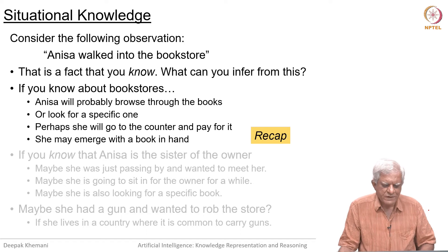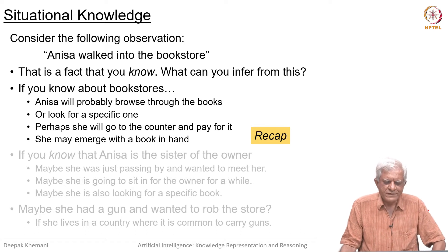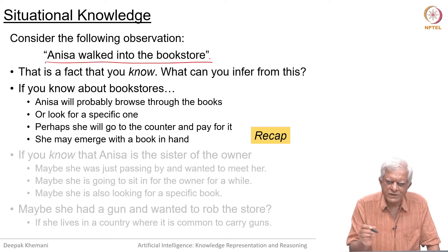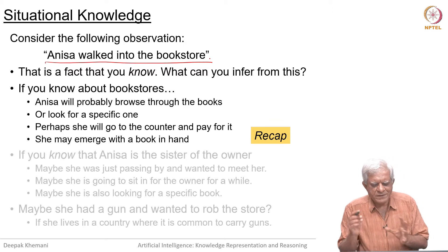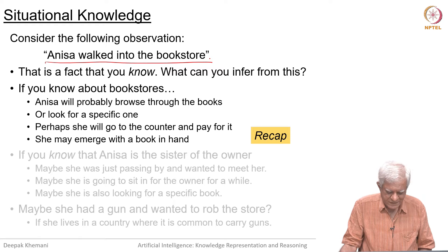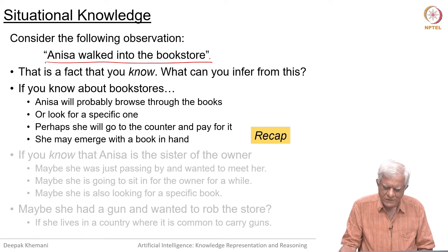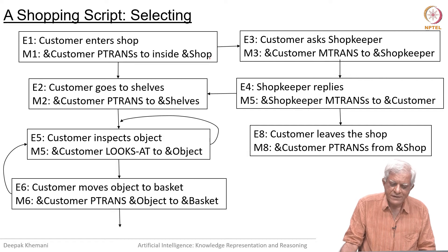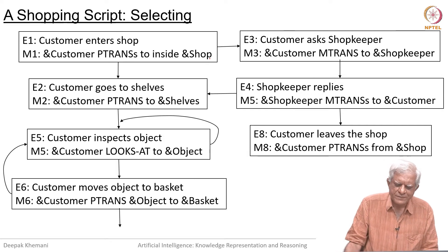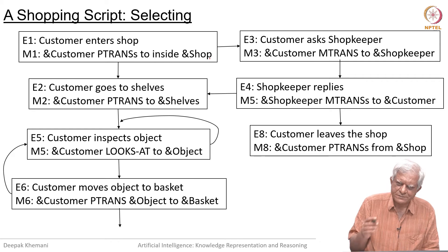This is just a recap of what we have said: we knew something about scripts, that if Anissa walked into a bookstore, we know what to expect — this is typically what happens in a bookstore. So what can you infer from this? We saw that there are things like scripts, which work as a sequence of conceptualizations.